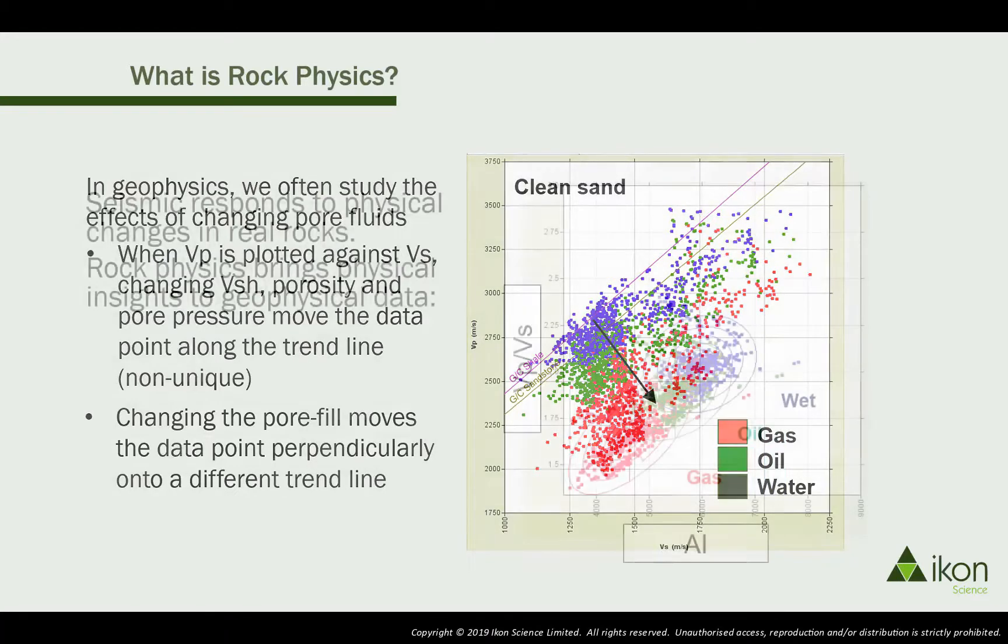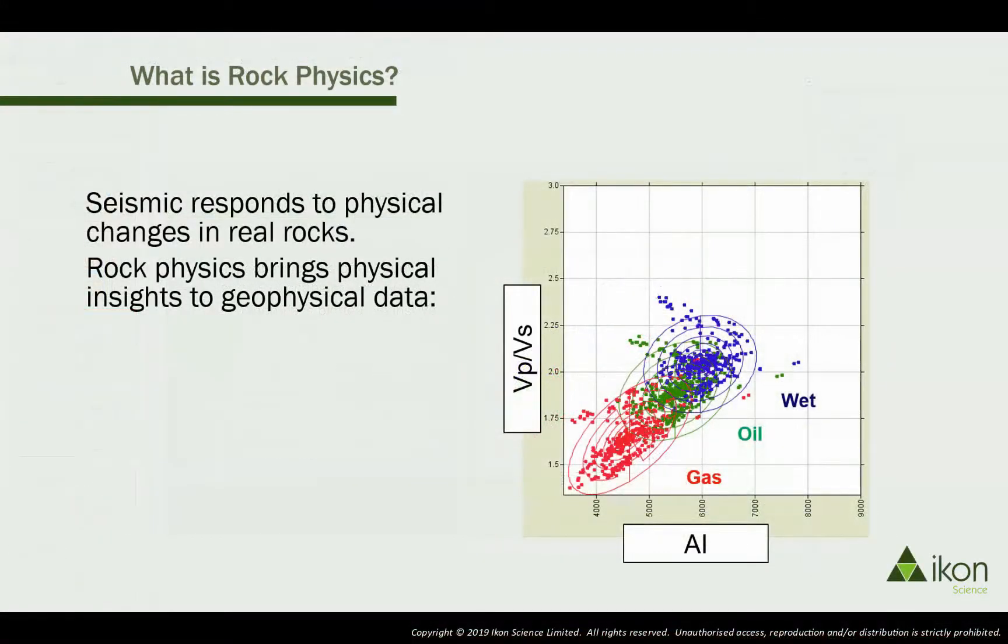This is something we can potentially exploit to identify hydrocarbons in our seismic. In this cross plot of acoustic impedance, P wave velocity times density, against VP over VS, we can see the effect of changing the fluid.